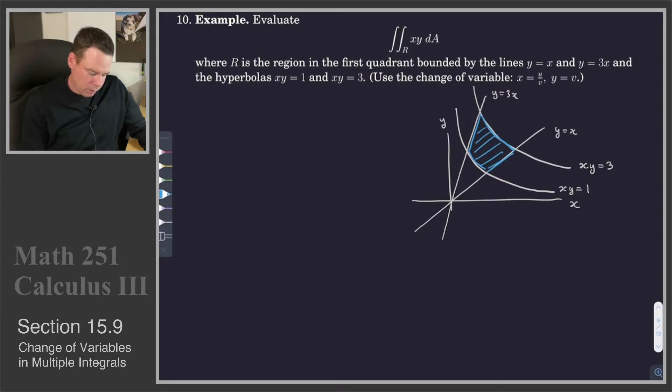Now, if we look at the change of variables that are given, x equals u over v, y equals v, then how do our boundary curves get represented in terms of those new variables?